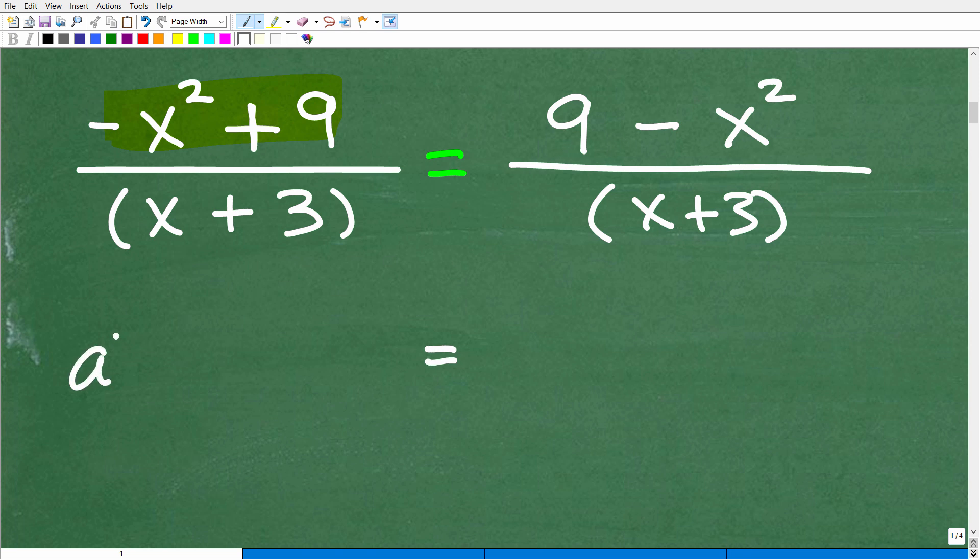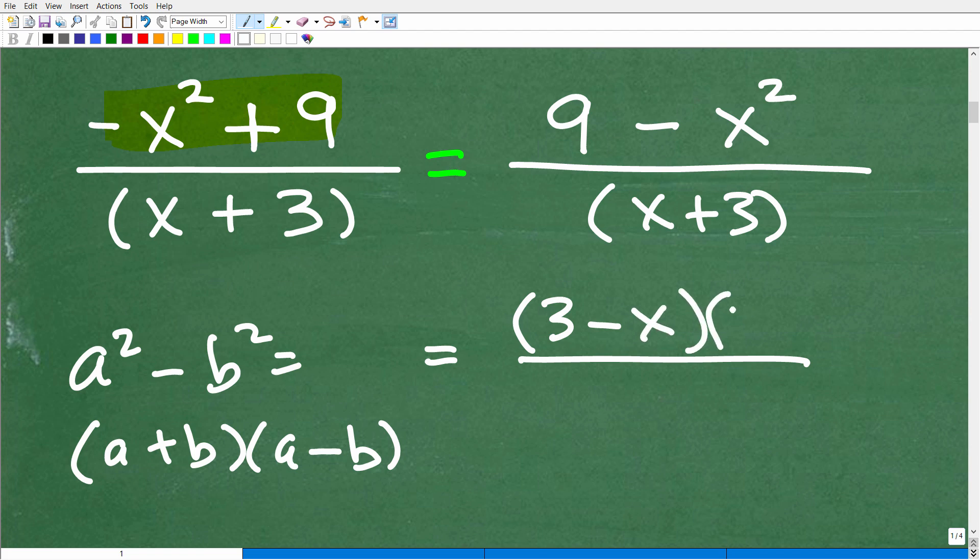So 9 minus x squared over x plus 3. Let's factor this again. The difference of two squares: a squared minus b squared equals a plus b times a minus b. Now here, our a is going to be 3 squared. So 3 squared is a squared. We have to be very careful here.